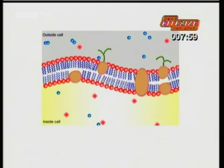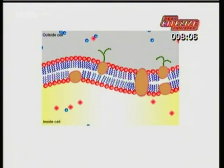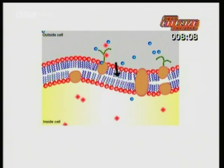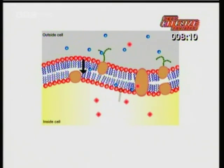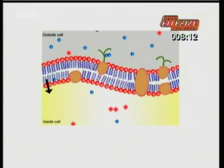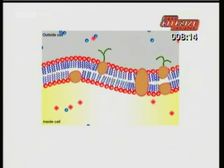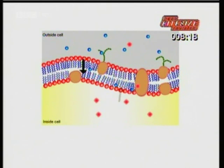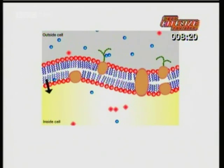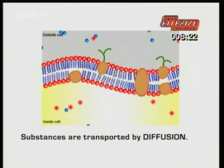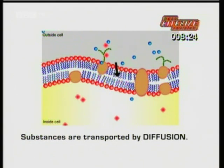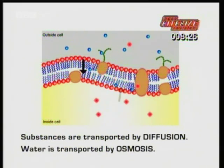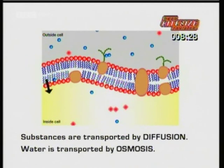A large part of a cell and its surroundings is water, and molecules of water and dissolved substances pass in and out of the cell through the cell membrane all the time. The cell membrane is partially permeable — it allows some substances to pass through but not others. Substances are transported across the cell membrane by diffusion, and water is transported across the cell membrane by osmosis.